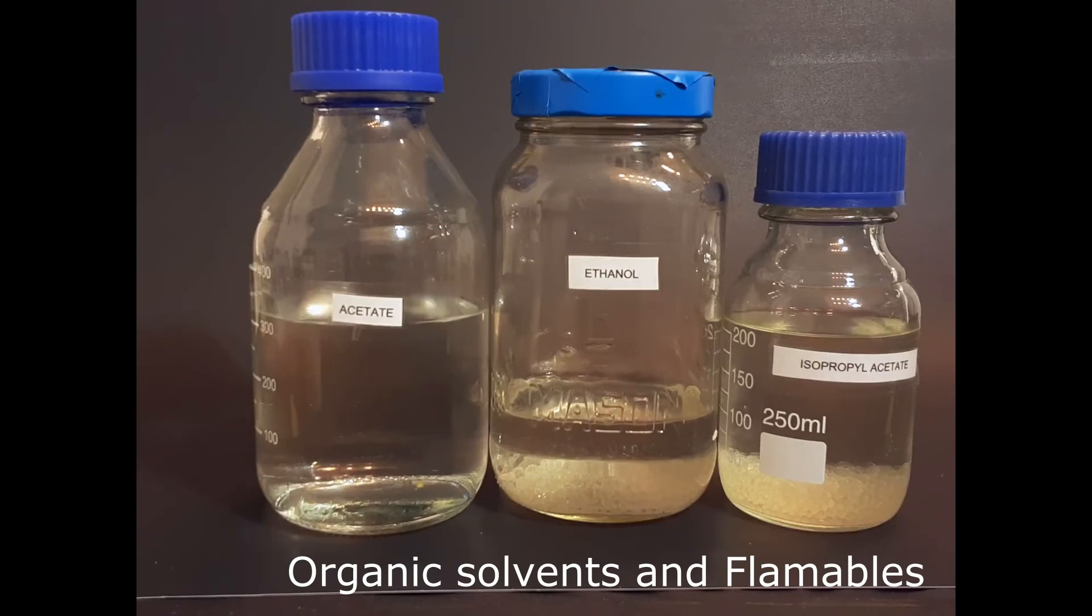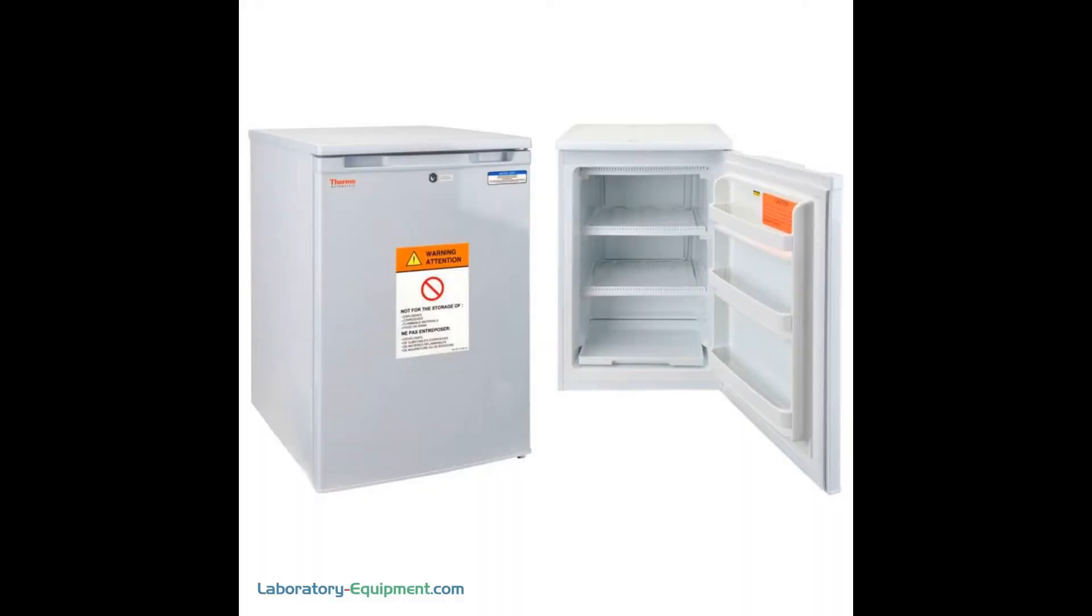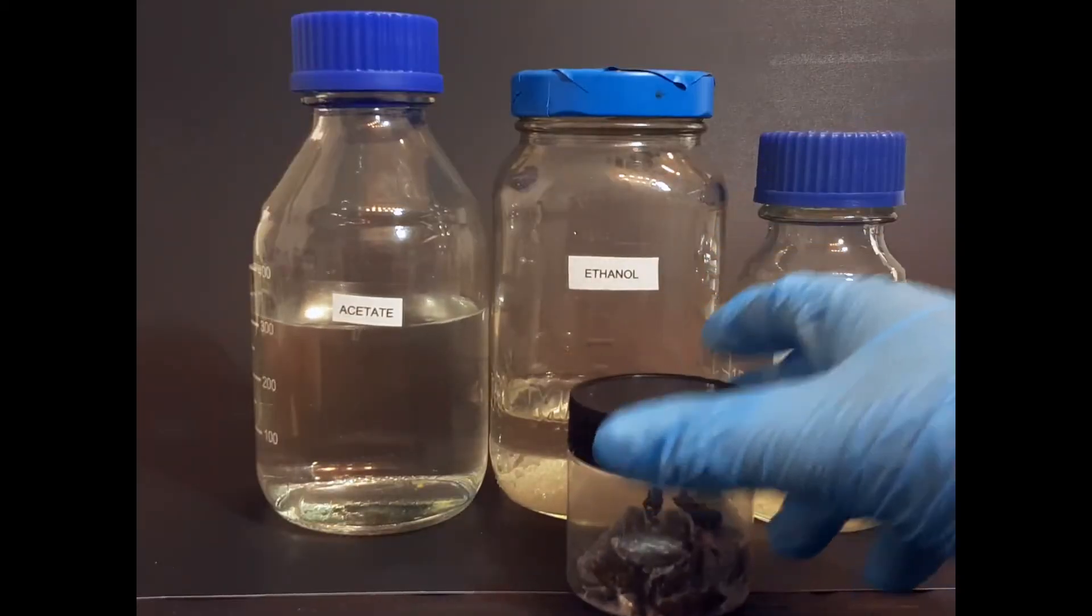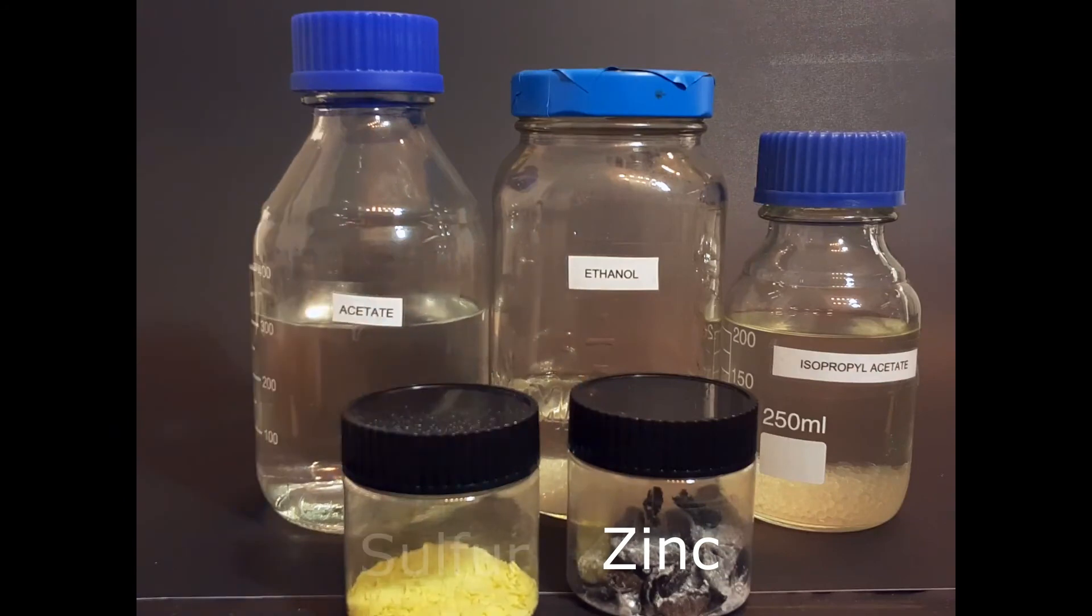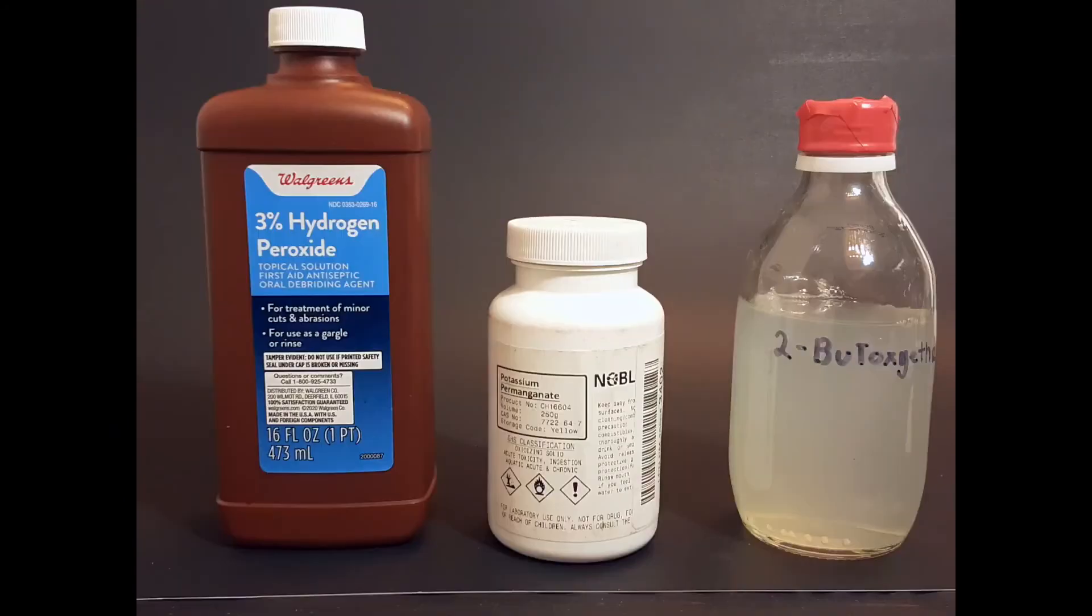Things like organic solvents and flammables should be stored in things like solvent cabinets, flammable cabinets, or fridges. They can be stored with other things like metals and sulfur, but it's not really recommended.